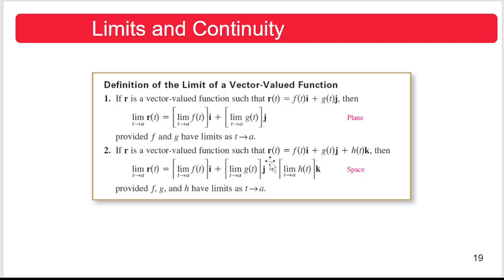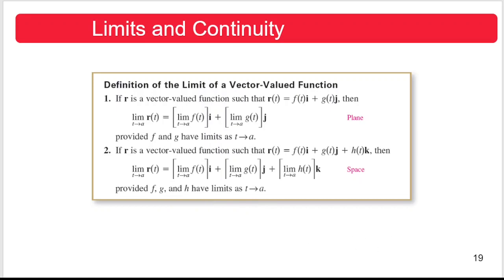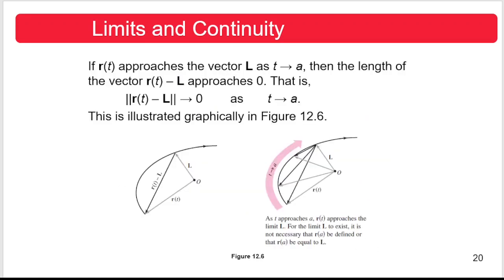If r is a vector-valued function in three-dimensional space defined as r(t) = f(t)i + g(t)j + h(t)k, then the limit of r(t) as t approaches a is the limit of f(t) as t approaches a times i, plus the limit of g(t) as t approaches a times j, plus the limit of h(t) as t approaches a times k. These limits exist provided that the real-valued functions f, g, and h have limits as t approaches a.